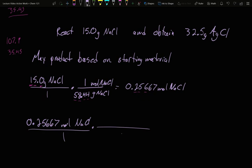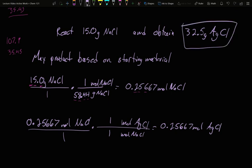0.25667 mole of NaCl. And I want to get out of mole NaCl and into mole silver chloride. Well, the balanced reaction had us one for one. So I should make the same number of moles. Assuming all of my sodium chloride converted, I should make 0.25667 moles of my product, silver chloride. Well, we made 32.5 grams. Is that all of it? We have the moles at the moment. How much should this many moles weigh?